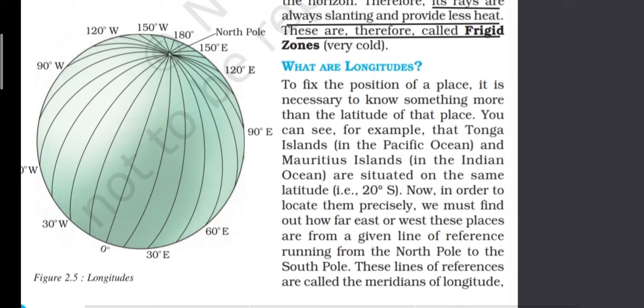What are longitudes? To fix the position of a place it is necessary to know something more than the latitude of that place. For example, Tonga Island and Mauritius Island are situated on the same 20 degree south latitude. In order to locate them precisely we must find out how far east or west these places are from a given line of reference running from north pole to the south pole. These lines of reference are called the meridians of longitude.